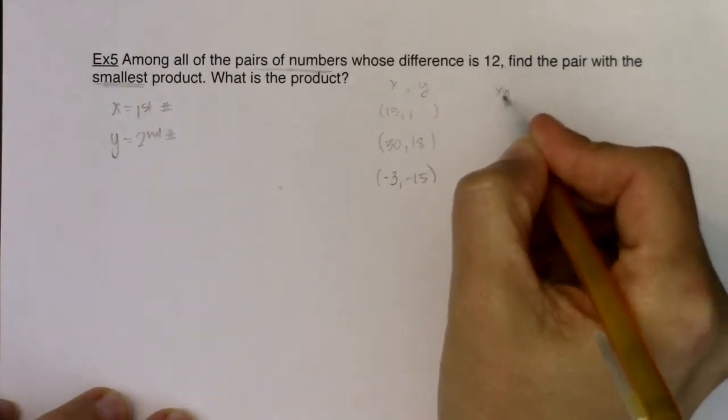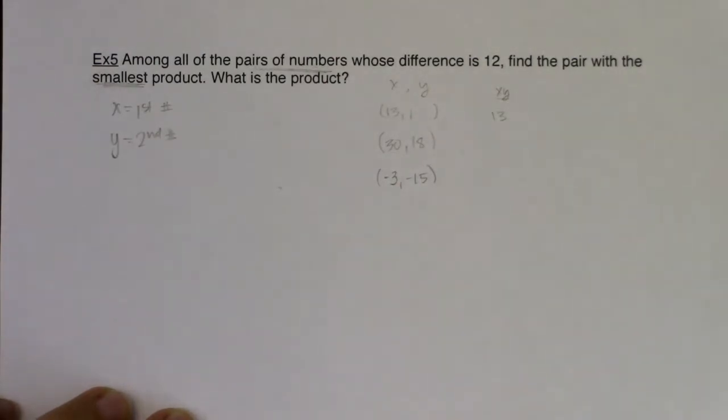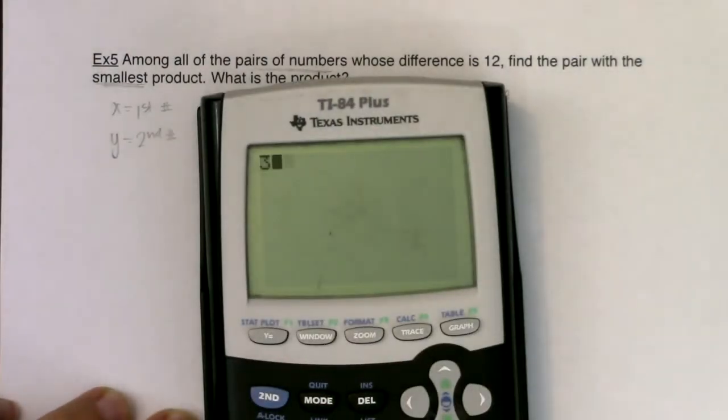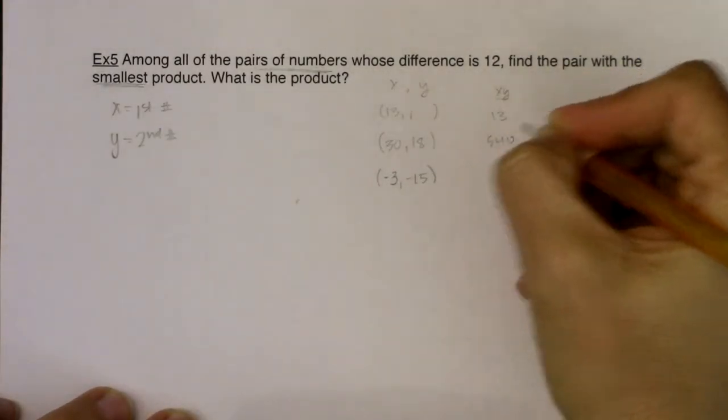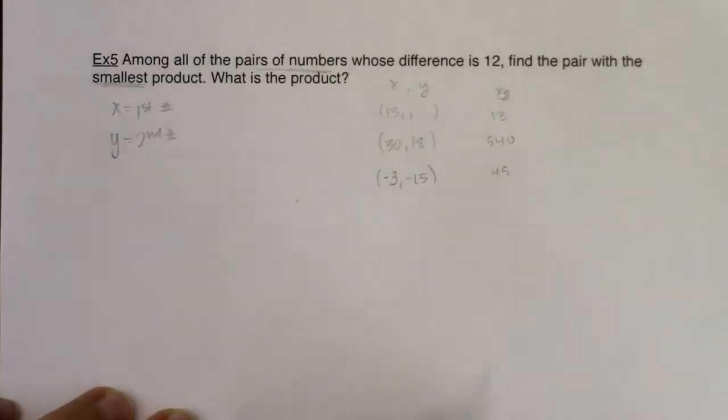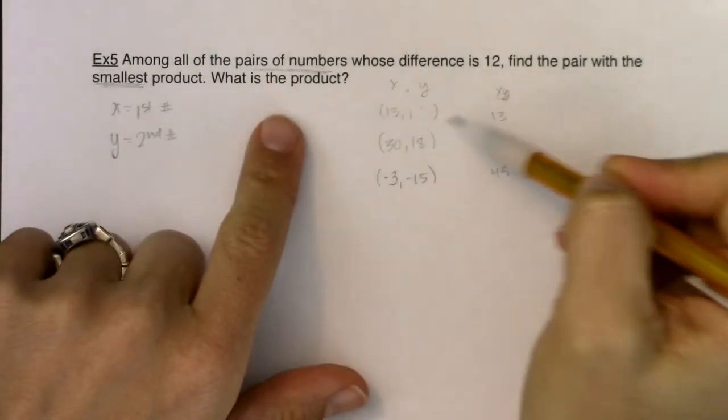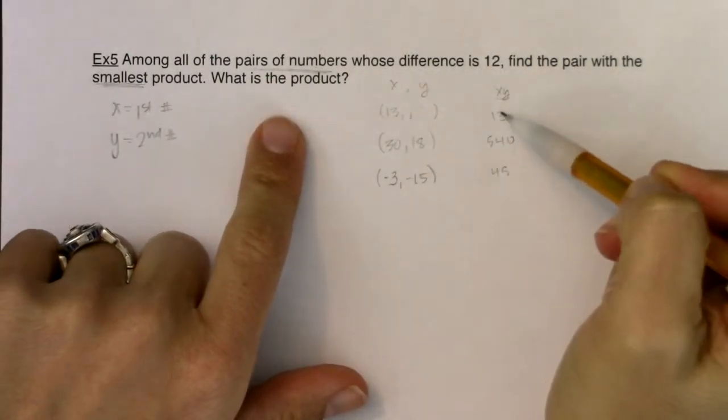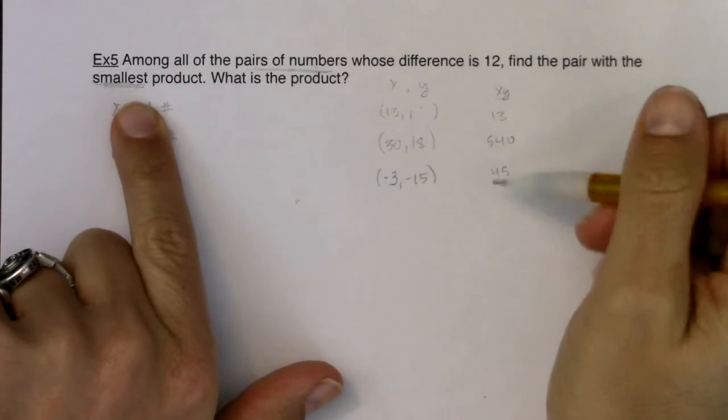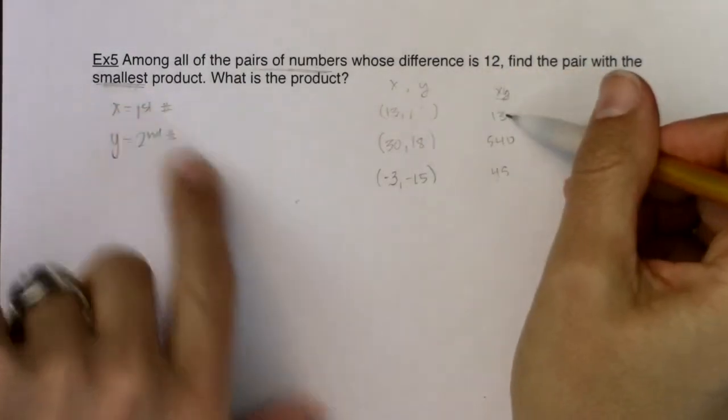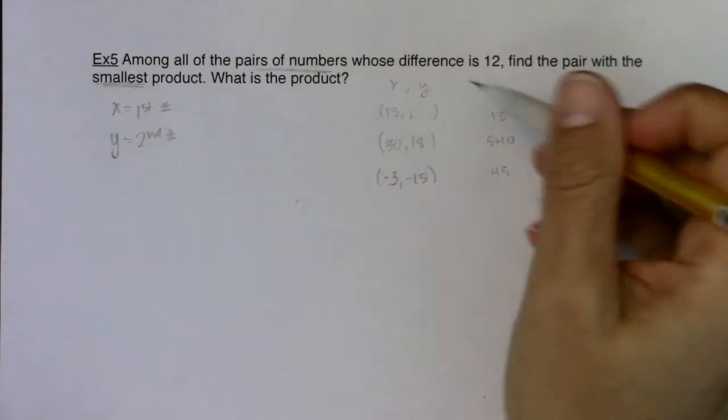Now imagine if you multiplied these numbers. This would be 13, I don't know what this one would be equal to. Let me get my calculator out. 30 times 18 would be what, 540? Negative 3 times negative 5 would be 45. So you can see that with these different ordered pairs, these different pairs of numbers whose difference is 12, they have different products. And so one of these apparently has to be the smallest product. For the ones I've just sketched out right now, it looks like 13 and 1, but I have no reason to believe that's the smallest one overall. So I want to find these.